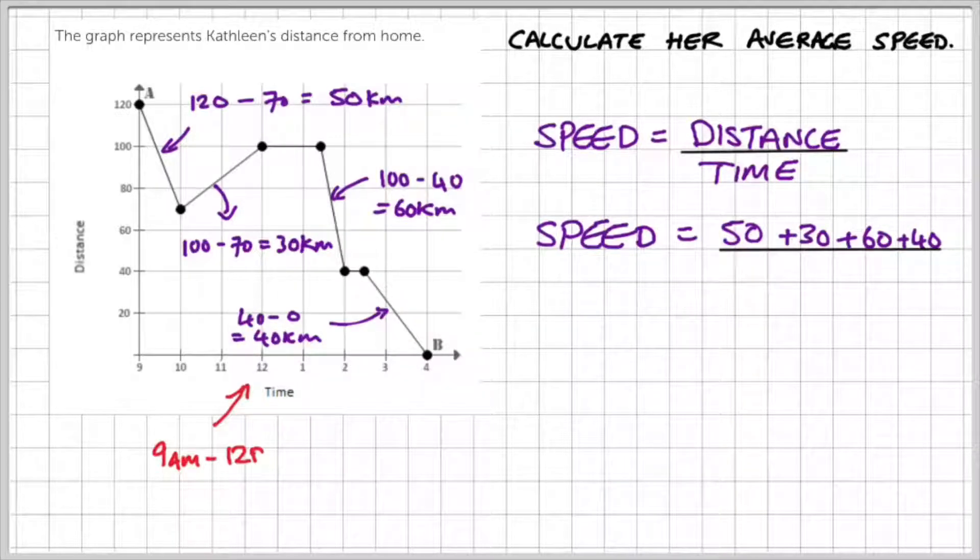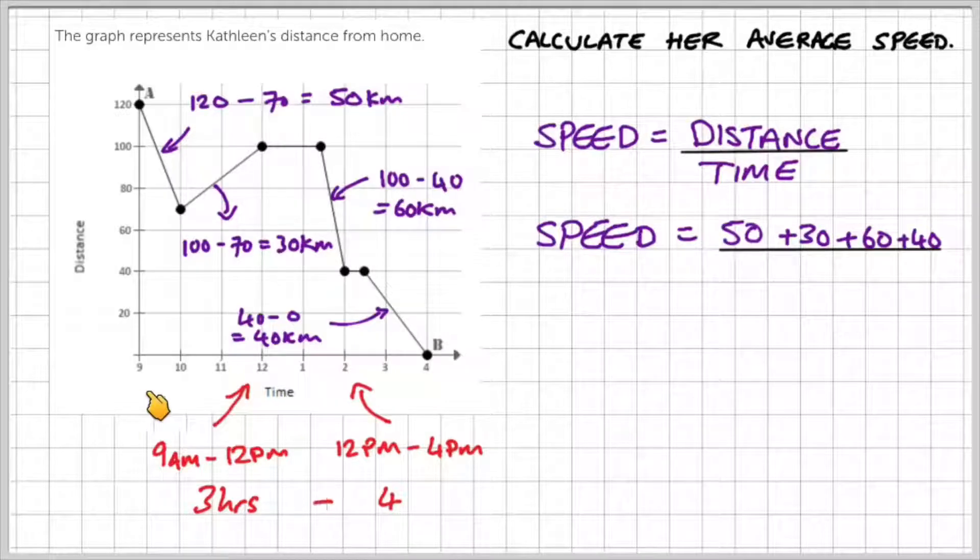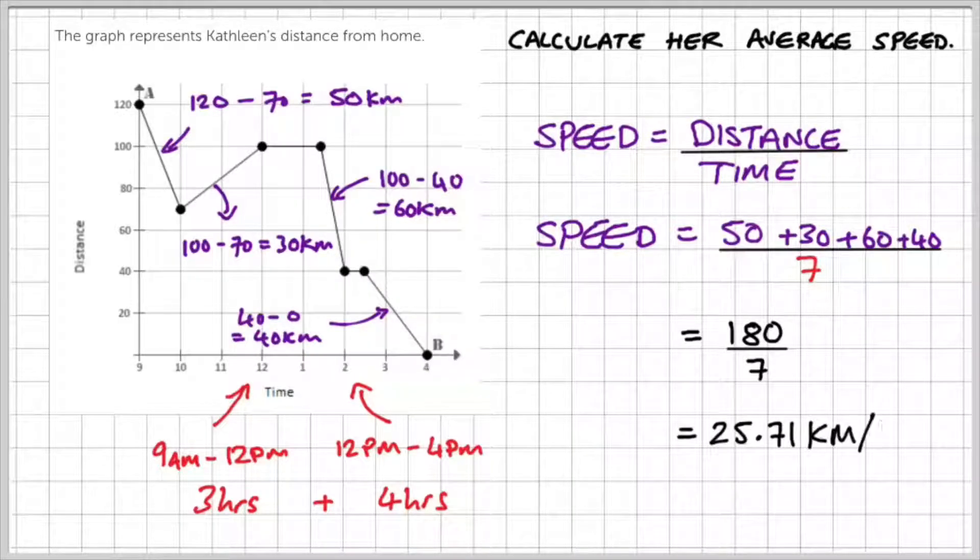So we need to divide that by the total time. So 9am to noon is 3 hours. And then from noon to 4pm is going to give us 4 hours. So that's a total of 7 hours. So therefore, if we divide 180 by 7, we will get 25.71 kilometres per hour.